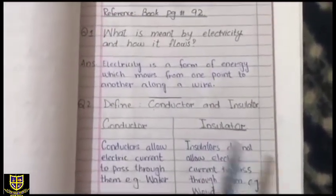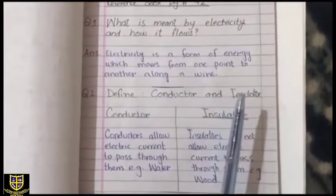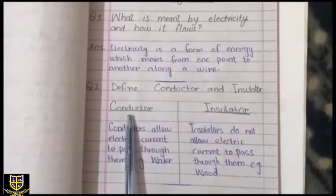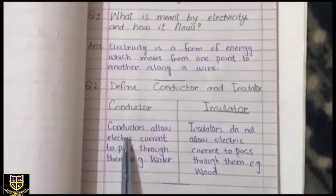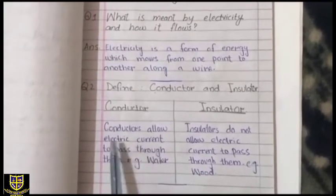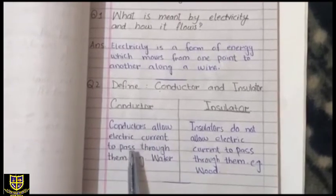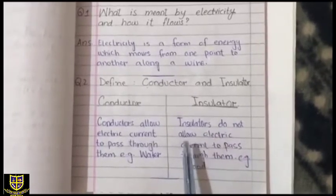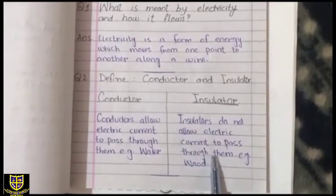Question number two: define conductor and insulator. You have to define both. On one side write conductor and on the other side write insulator, with a line in between. Conductors allow electric current to pass through them — for example, water. Insulators do not allow electric current to pass through them — for example, wood.